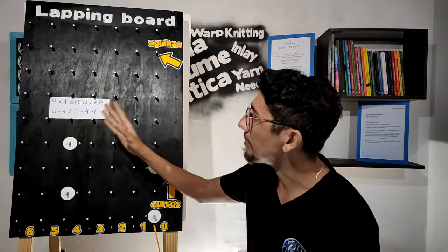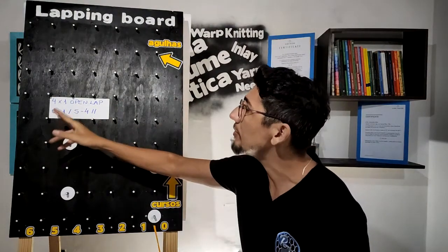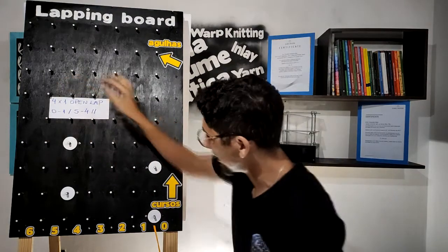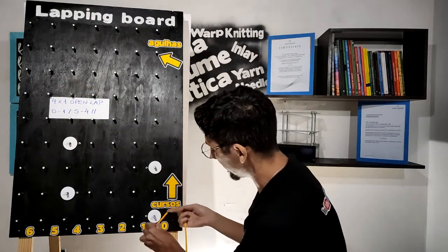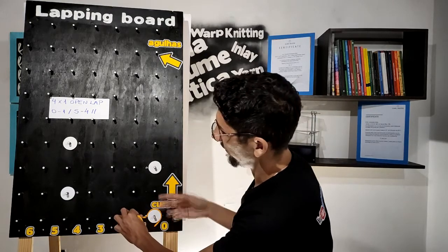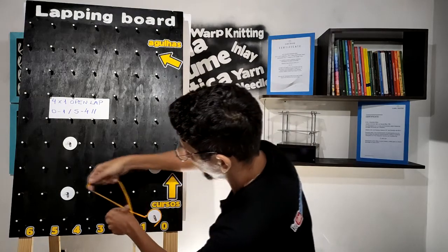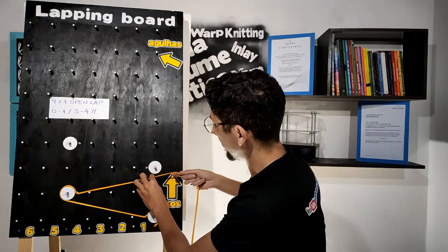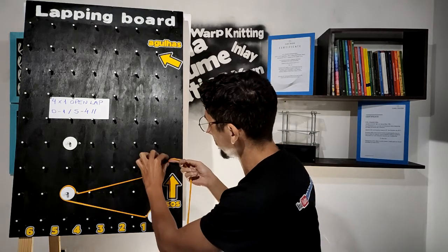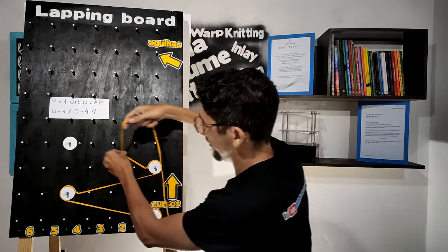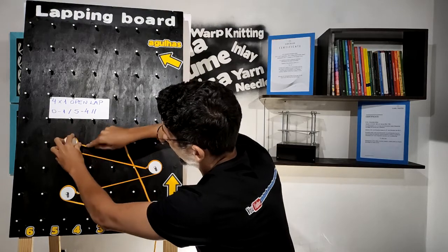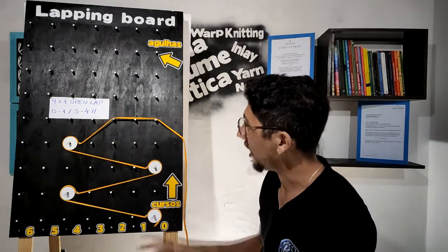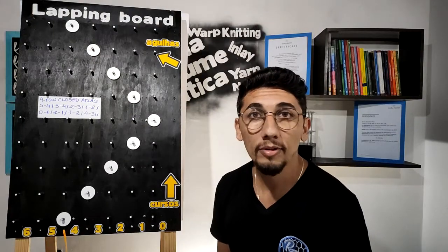Let's represent the four-by-one open lap, which has chain notation zero-one-five-four. Making the first stitch: zero-one. Now we go to five-four. This is the repeat. I'm going to make it on the next needle: zero-one again, and five-four. This is the representation of the four-by-one open lap on the lapping board.